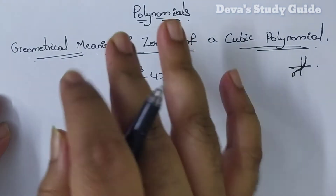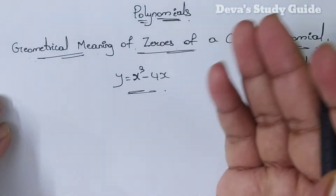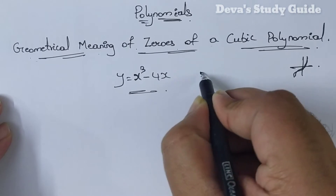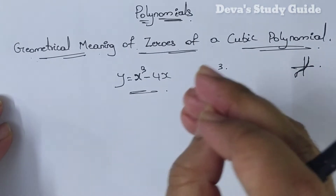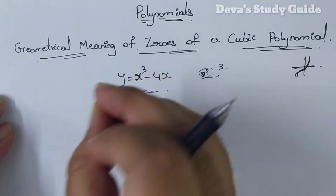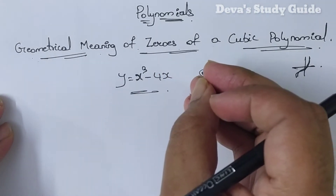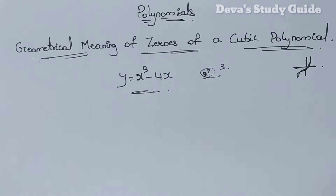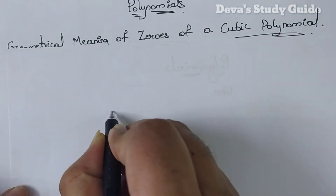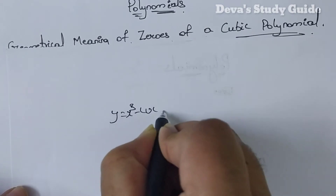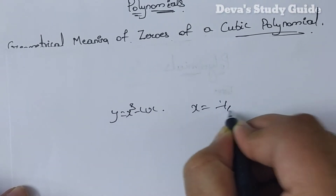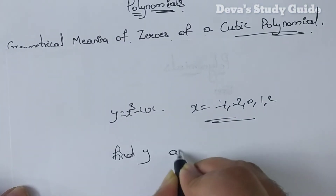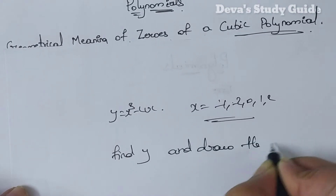I will do so. We will find the factorization of x values. The question is y is equal to x cube minus 4x. We need x values: x is equal to minus 1, minus 2, 0, 1, 2. Find y and draw the graph.